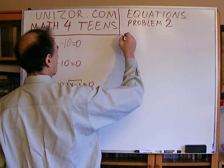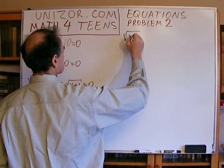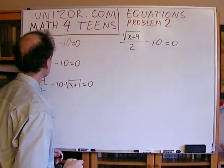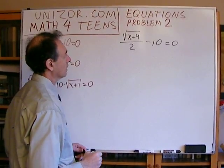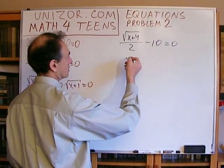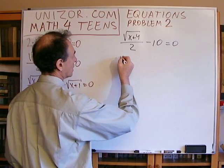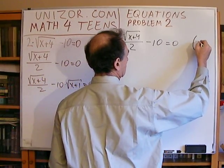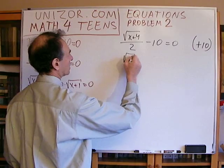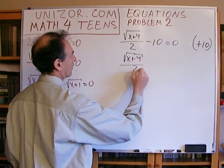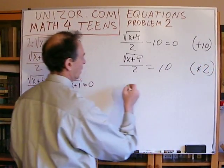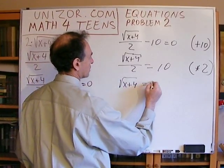The next equation is: √(x + 4) / 2 minus 10 equals zero. This is not much different from the previous one — the only difference is division by 2, not multiplication by 2. The first obvious transformation is plus 10, giving us √(x + 4) / 2 = 10. Multiplied by 2, we get √(x + 4) = 20.